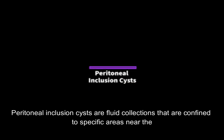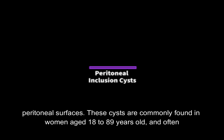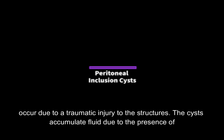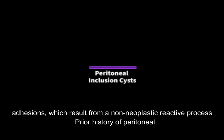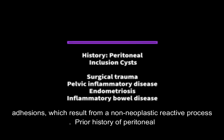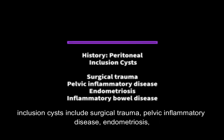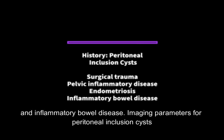Peritoneal inclusion cysts are fluid collections confined to specific areas near the peritoneal surfaces. These cysts are commonly found in women aged 18 to 89 years old, and often occur due to traumatic injury. The cysts accumulate fluid due to the presence of adhesions, which result from a non-neoplastic reactive process. Prior history associated with peritoneal inclusion cysts includes surgical trauma, pelvic inflammatory disease, endometriosis, and inflammatory bowel disease.